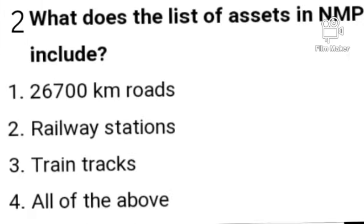Question number two. What does the list of assets in NMP include? Option A: 26,700 kilometers road. Option B: Railway stations. Option C: Print tax. Option D: All of the above.